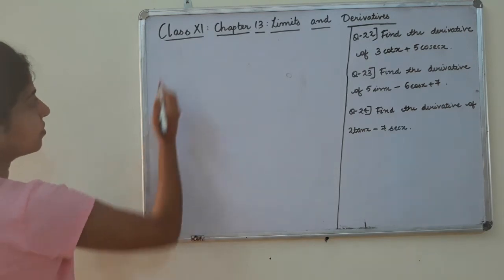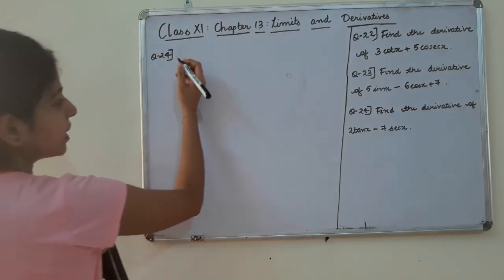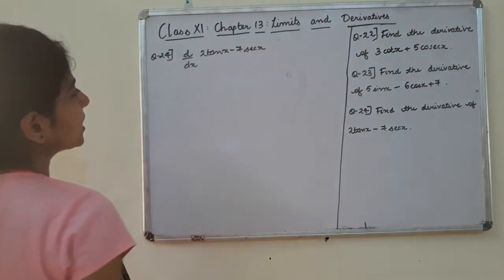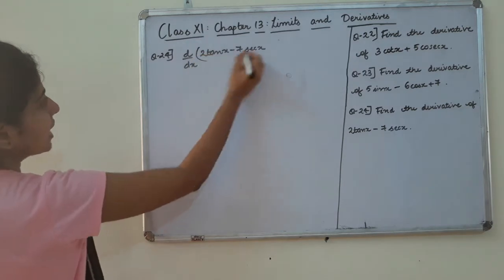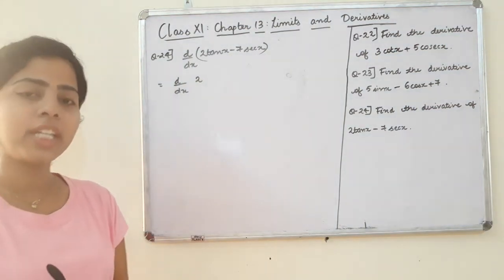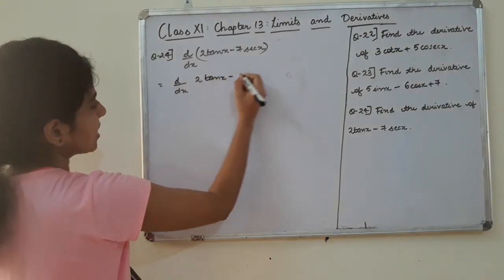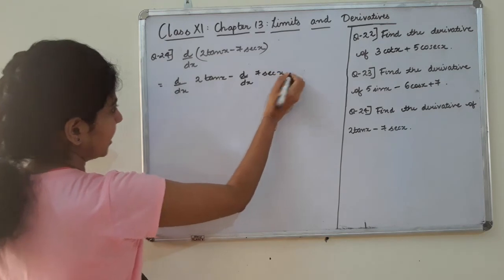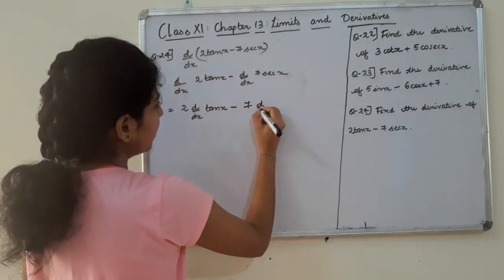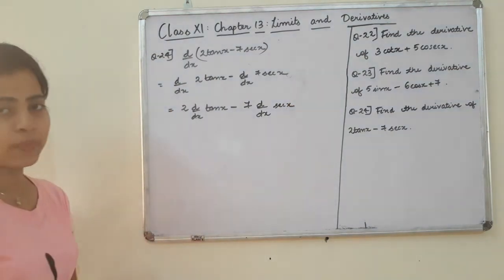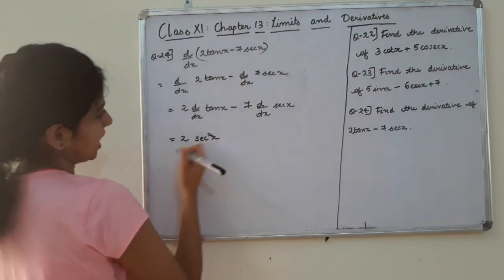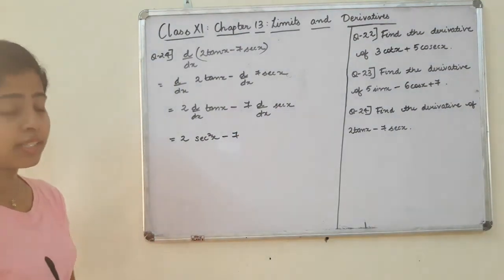Find the derivative of 2 tan x minus 7 cosec x. Using the difference rule: 2 into d/dx of tan x minus 7 into d/dx of cosec x. The derivative of tan x is sec squared x, and the derivative of cosec x is minus cosec x cot x. So the result is 2 sec squared x minus 7 times minus cosec x cot x.